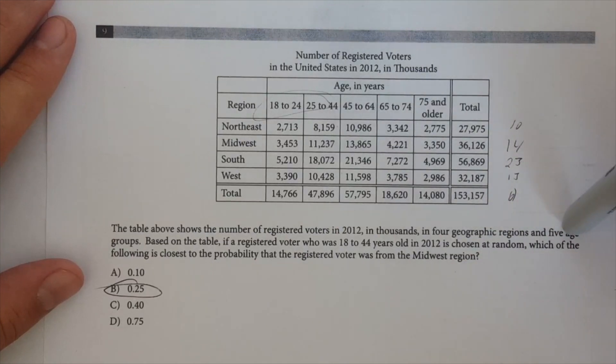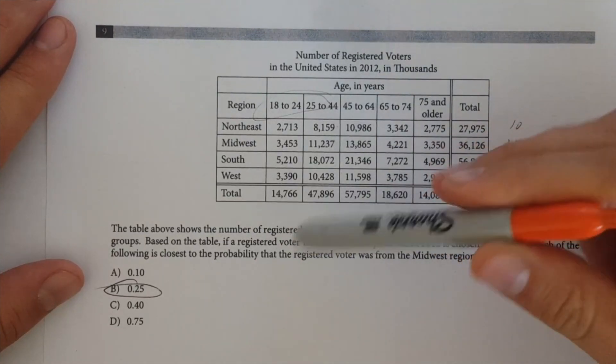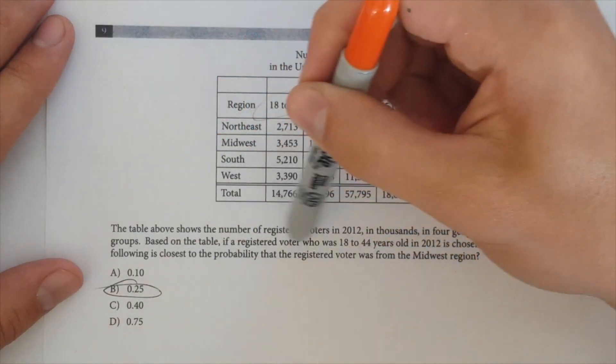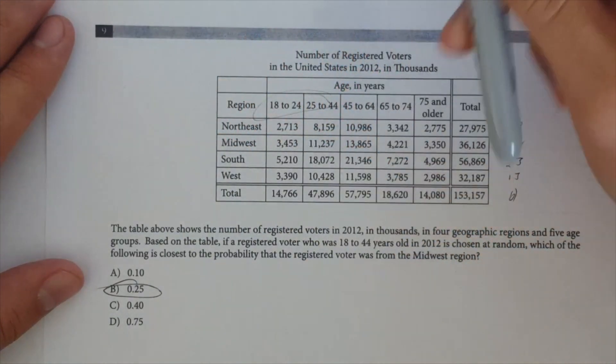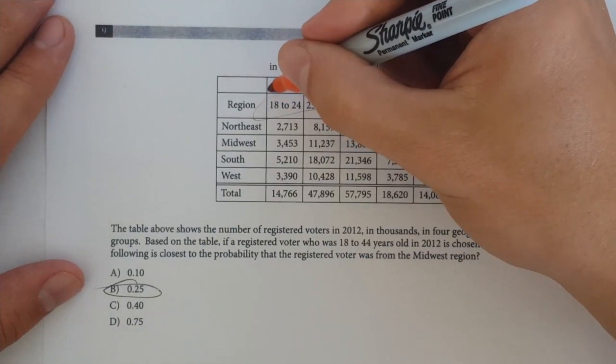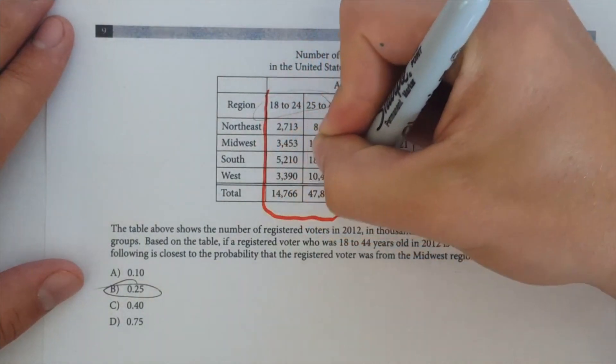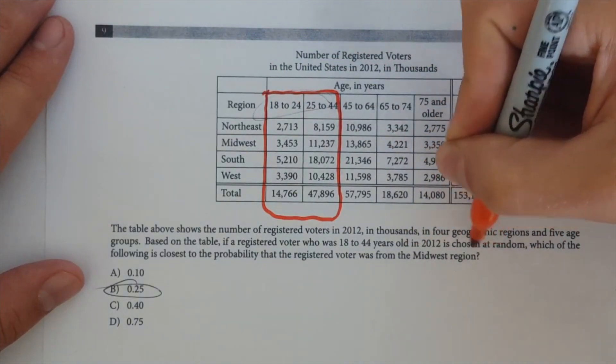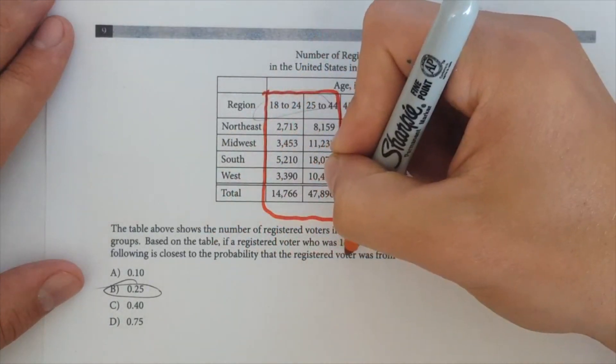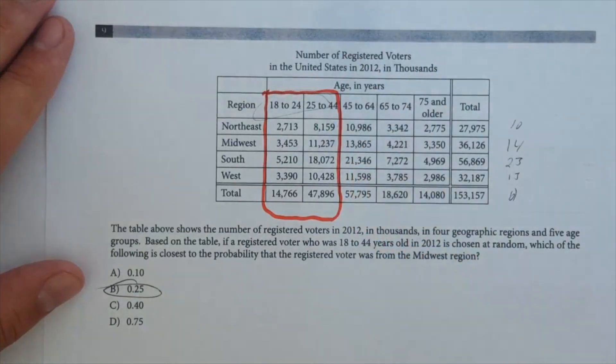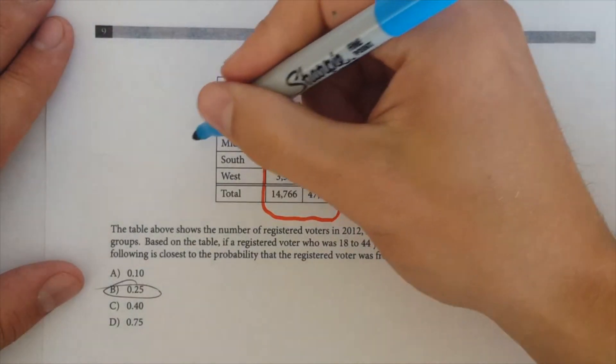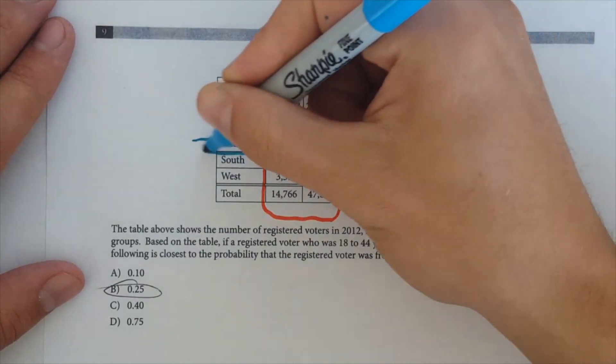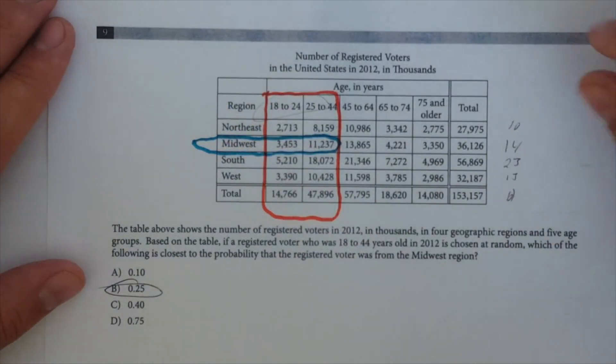So, the table above shows the number of registered voters in 2012, in thousands, in four geographic regions, and five age groups. Based on the table, registered voter, so let's look at this. If the registered voter was 18 to 44 years old, all right, so it's 18 to 44, so that then comes as two columns, is chosen at random.